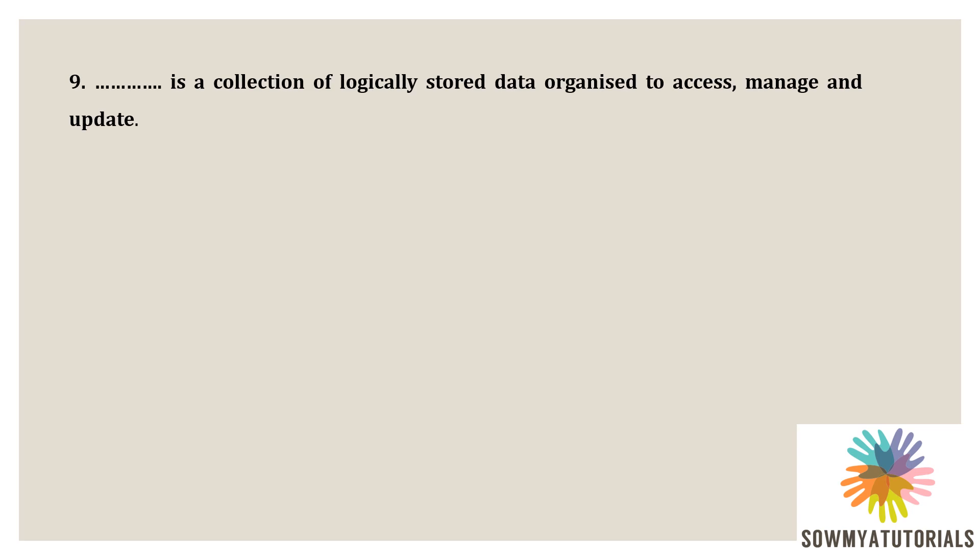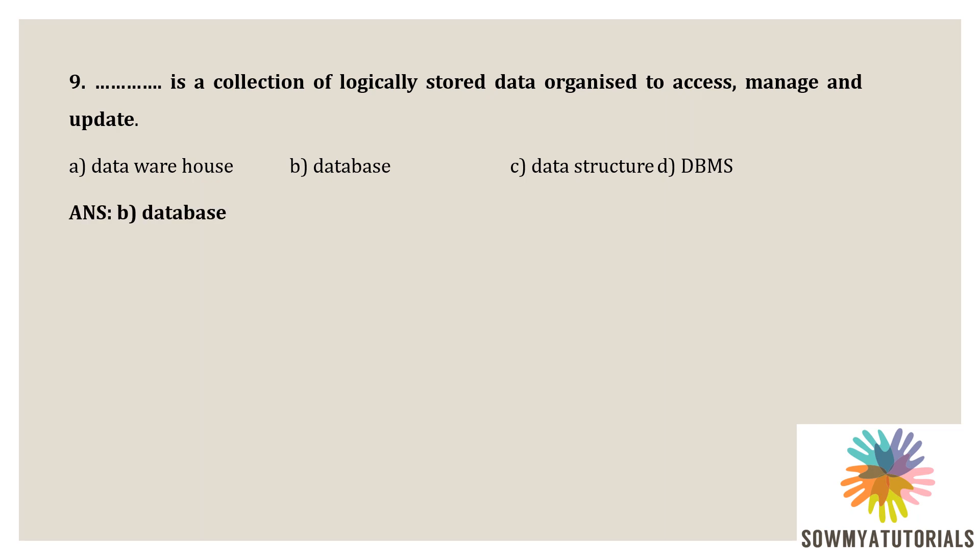Next question: dash is a collection of logically stored data organized to be accessed, managed, and updated. Options are A) data warehouse, B) database, C) data structure, D) DBMS. The correct answer is B — database, because a database is a collection of logically related data organized so it can be easily accessed, managed, and updated.